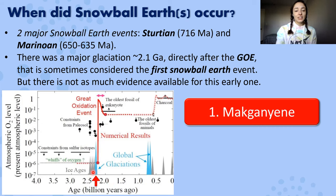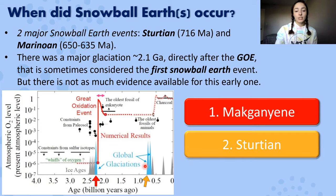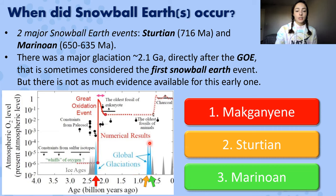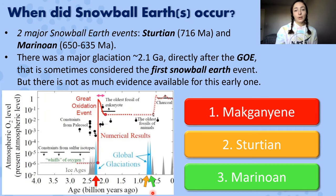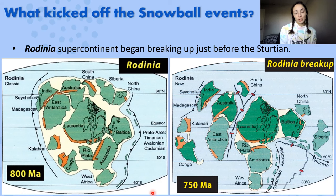We can see this glaciation occurred on a graph between 2 and 2.5 billion years ago, right where we see the Great Oxidation Event occur. Then we have the Sturtian as the second peak in global glaciations, and the Marinoan glaciation as the third peak. Since most of our evidence is for the Sturtian and Marinoan glaciations, we'll focus mainly on those today.